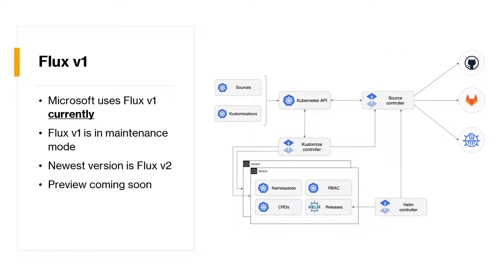Be aware that Microsoft is using Flux v1 in the current implementation of GitOps on Azure Arc for Kubernetes. Flux v1 today is in maintenance mode — no new features are coming because the newest version is Flux v2, which is much improved. That means if you're using GitOps with Azure Arc enabled Kubernetes today, that version will have to be replaced soon. I recommend getting your hands dirty and learning how it works, but not implementing it in production today. A preview with Flux v2 support is supposedly coming soon.